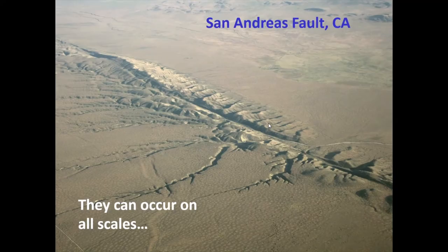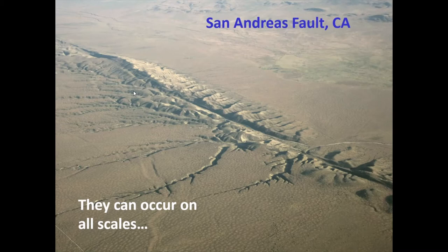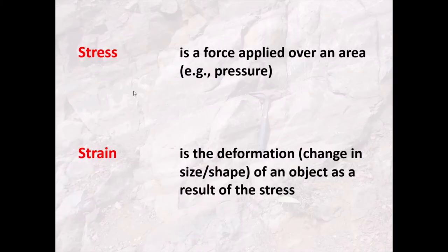Faults can occur on all scales — they can even occur on micro scales, on outcrop scales like this, but then they can also occur on continental scales. This is probably the most famous fault in the world: the San Andreas Fault in California, where the fracture runs for thousands of kilometres.